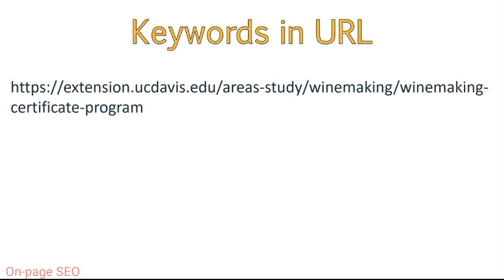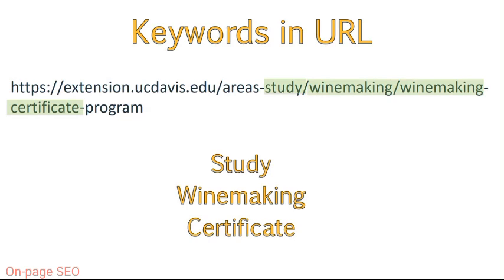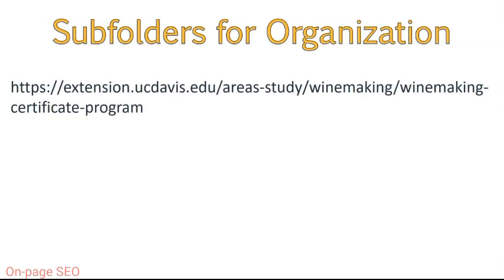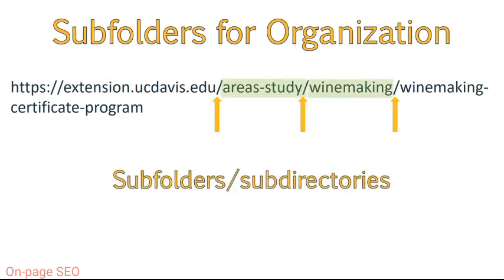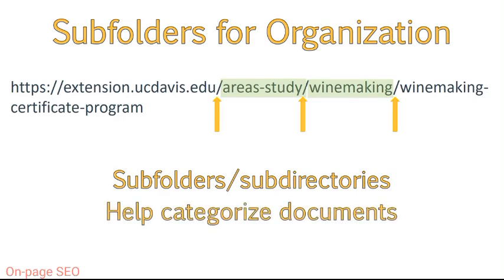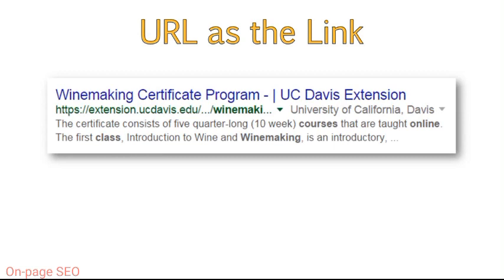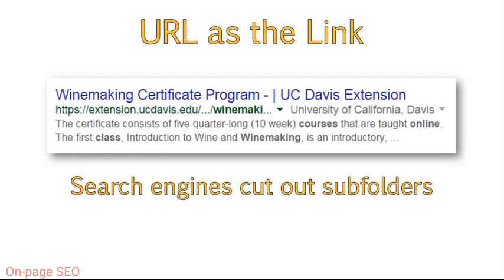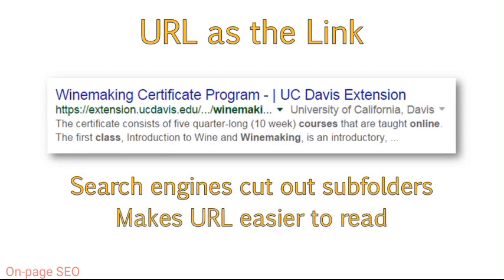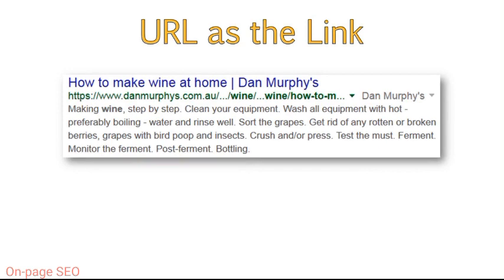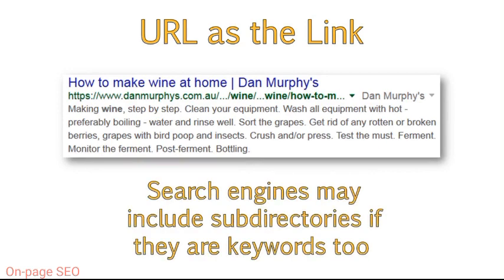For example, if we look at the full URL for the UC Davis program, this page might be seen as more relevant for words like 'study,' 'winemaking,' and 'certificate,' which all point to an overall theme for this page. When looking at this URL, you can see various forward slashes containing information — for example, 'areas of study' and 'winemaking.' These are subfolders, also known as subdirectories, which help to categorize documents on a site. When search engines display the URL, they will generally cut out the middle categories or subfolders to make the URL shorter and easier for viewers to read. You can see this in the example search result where I highlighted the area that Google removed. If important keywords are included within the subdirectories, part of the subdirectory name might be included in the search results and will be bolded, which will help draw attention to the result.